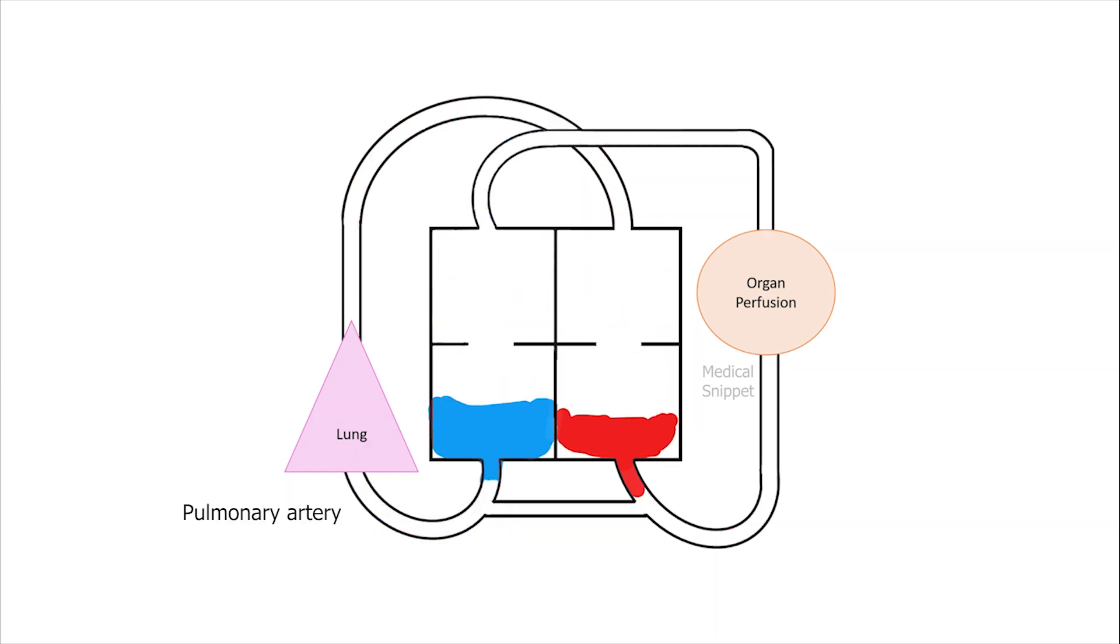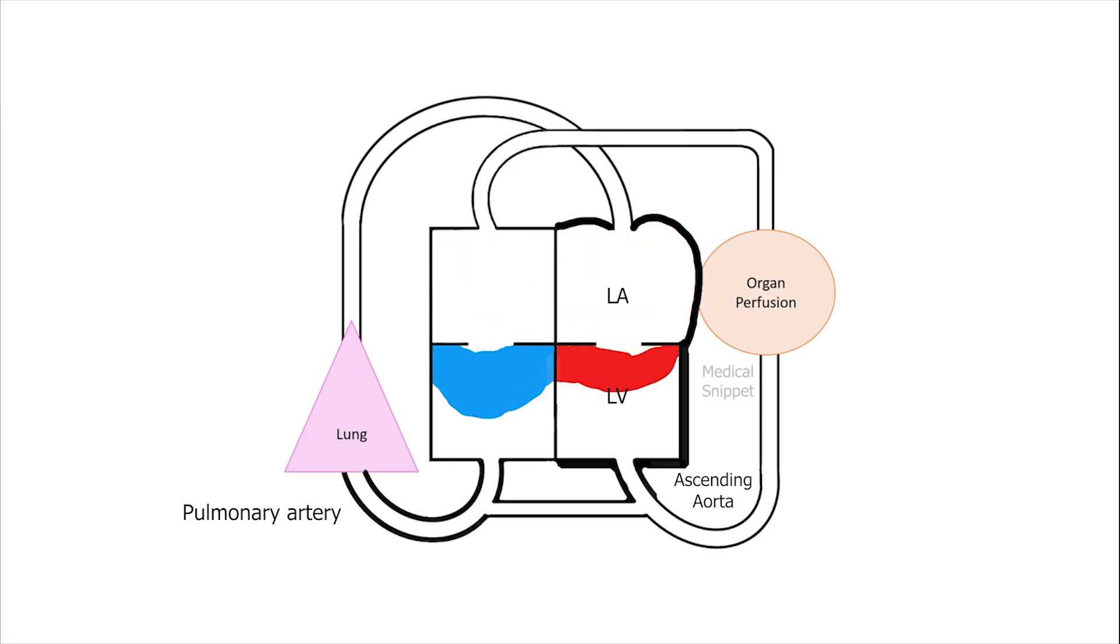The increased blood flow reaches left atrium, left ventricle, and is then pumped into the aorta. Thus with time there is enlargement of pulmonary artery, left atrium, left ventricle, and aorta. This pathophysiology is similar to VSD, but in VSD there is no aortic enlargement.